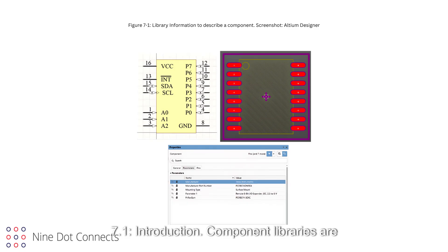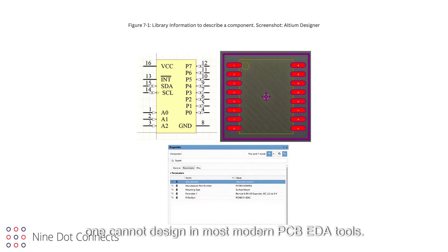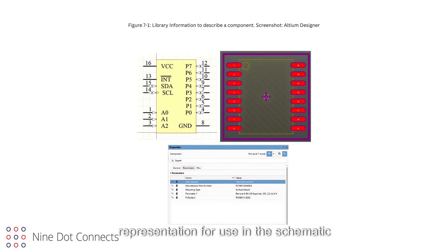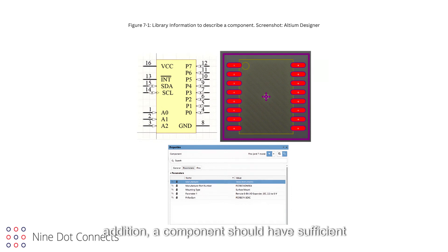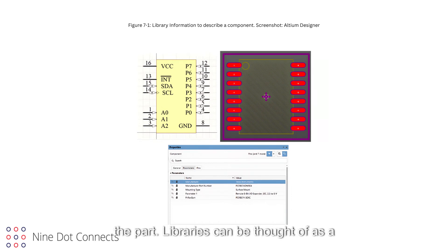Component libraries are the backbone of PCB design, and without them, one cannot design in most modern PCB EDA tools. Each component must have a symbolic representation for use in the schematic diagram, and a physical implementation in the form of a footprint for the PCB layout. These are commonly referred to as models. In addition, a component should have sufficient parametric data to fully describe the part. Libraries can be thought of as a container of components.